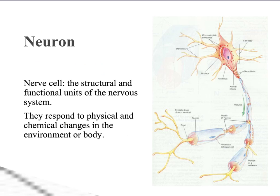We need to learn the anatomy of this neuron. This right here is the cell body. Like all cells, it has a nucleus which holds the DNA, and all of those organelles — mitochondria, endoplasmic reticulum, cytoplasm. This cell has receptive ends called dendrites. They respond to changes in the outside or inside environment; those physical and chemical changes are received right here at the dendrite end.